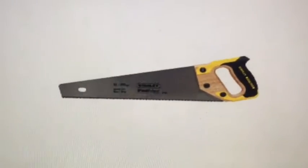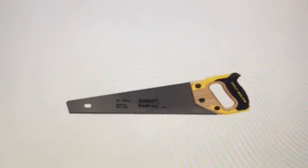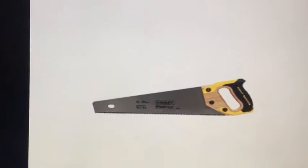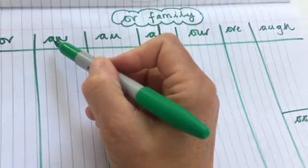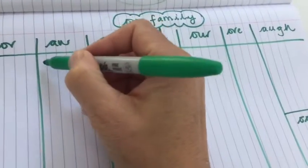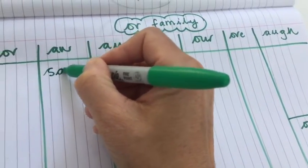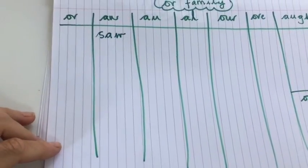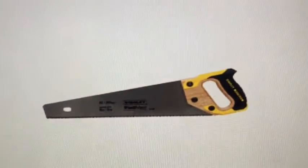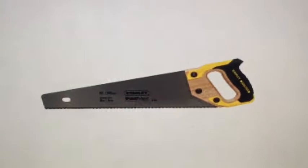The first picture is a saw. We can hear the 'or' sound in it, and the 'or' sound in 'saw' is made by the 'aw' diagraph. That's also the 'saw' as in 'I saw you playing in the park,' 'I saw you walking to the beach,' and 'I use a saw to cut the wood.'